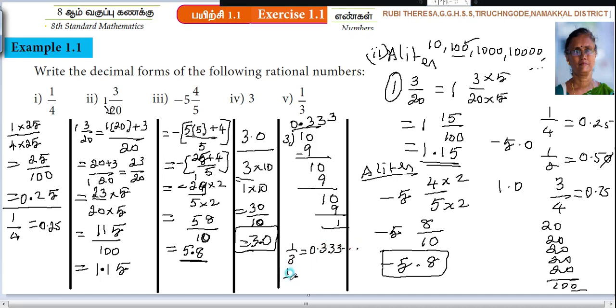That means what? You can write it like this also. 0.3 bar. Bar means what? This 3 repeats. 3 repeats again and again. Do you follow? Every one of you. Thank you.